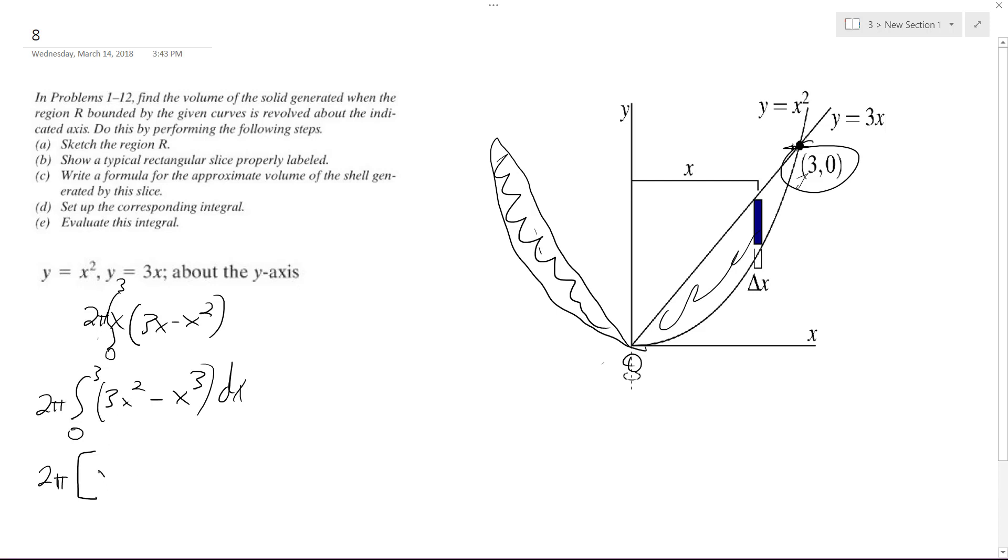Because the 3 on the bottom cancels the 3 coefficient, minus x to the 4th over 4, evaluated from 0 to 3.